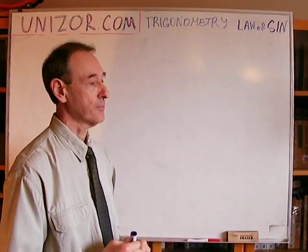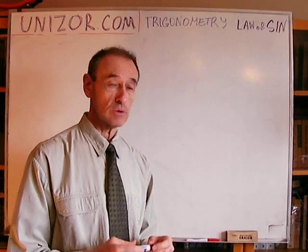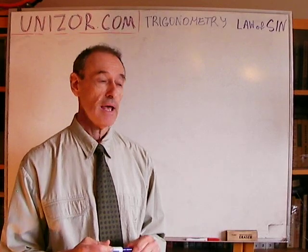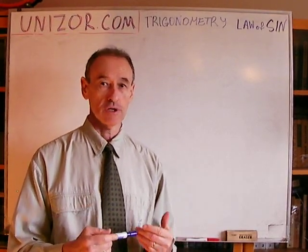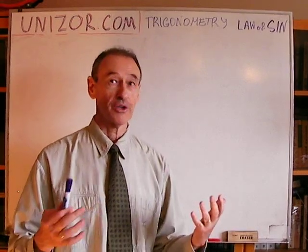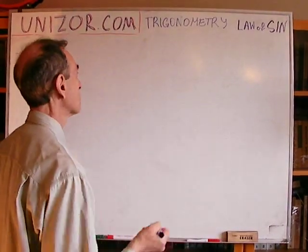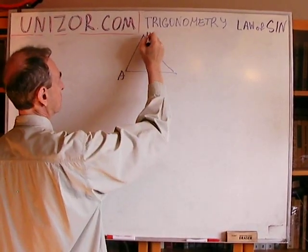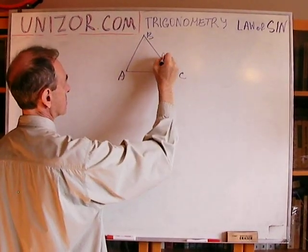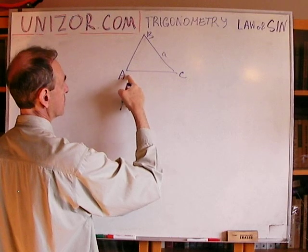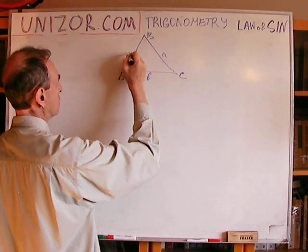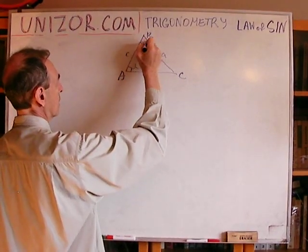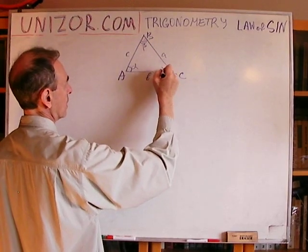So what is the law of sines? Actually, it looks quite, I would say, nicely and maybe unexpectedly. When I saw this particular identity, I was surprised how beautiful it looks, if you wish. Here is what it is. Let's say you have a triangle ABC, sides lowercase a across the vertex A, lowercase b across B, and lowercase c against C, and angles alpha at A, beta at B, and gamma at C.